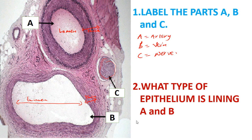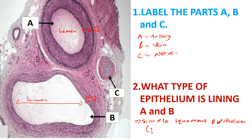What type of epithelium is lining A and B? As I mentioned, simple squamous epithelium is found in blood vessels and also in the Bowman's capsule region. This simple squamous epithelium in blood vessels has a special name — it is known as the endothelium. In some cases, they may not use the term 'simple squamous epithelium' but instead use the term 'endothelium.' This was my first revision class on epithelium.